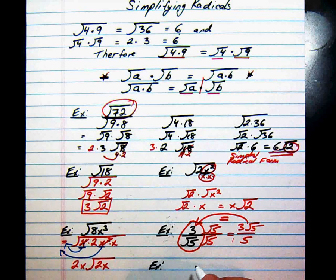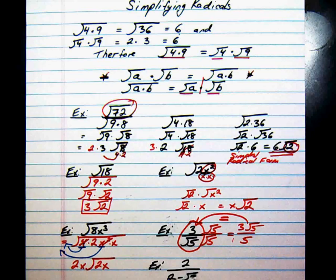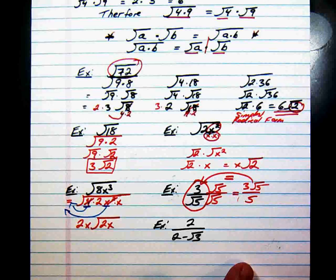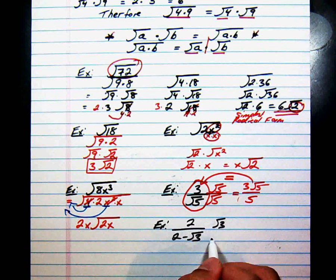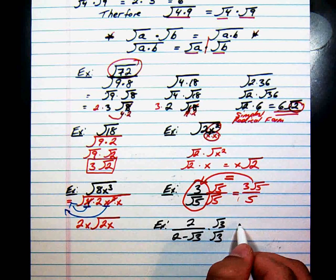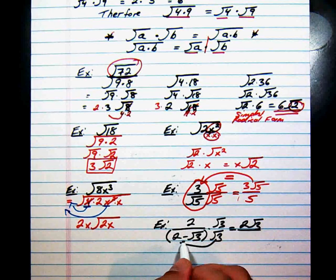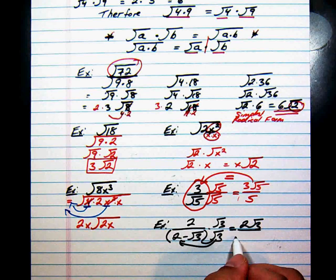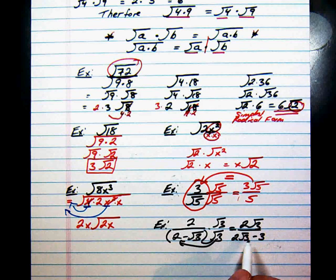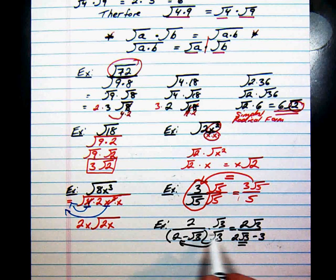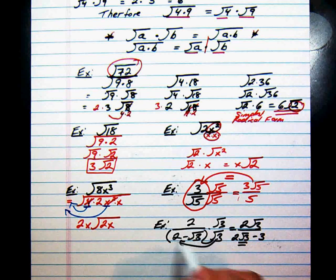If we have something like 2 over (2 minus √3), that's a radical in the denominator. You might think to multiply by √3 over √3, but let's see what happens: 2 times √3 is 2√3 on top. On the bottom with two terms, distributing √3 gives 2√3 minus 3. We still have a radical in the denominator — one term became a non-radical term, but the other term still has a radical. So this approach didn't work.